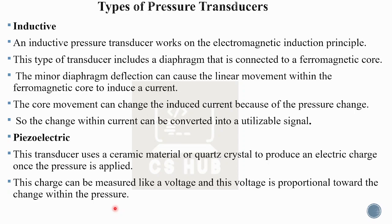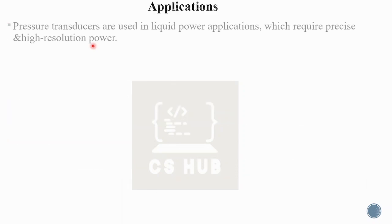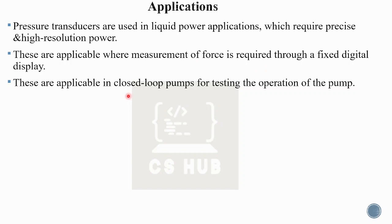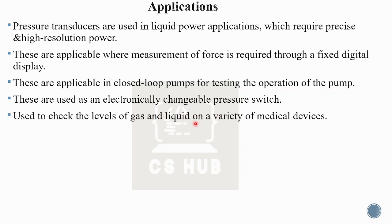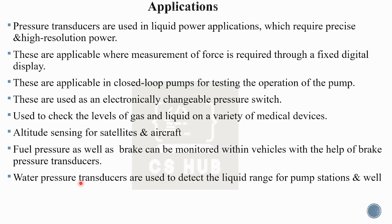These are the types of pressure transducers and their applications. They are used in liquid power applications which require precise and high resolution measurement. They are applicable where measurement of forces is required through a fixed-set digital display, and in closed-loop pumps for pump operation. Other applications include electronically changeable pressure switches, gas levels for liquid medical devices, altitude-sensing for aircraft and satellites, fuel pressure monitoring, brake pressure monitoring within vehicles using brake pressure transducers, and water pressure measurement in pump stations.